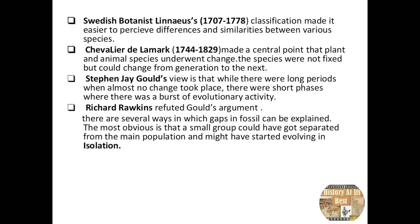Stephen Jay Gould's view was that while there were long periods when almost no evolutionary change took place, there were short bursts of evolutionary activity — known as punctuated equilibrium. Richard Dawkins refuted Gould's argument and said there are several ways fossil gaps can be explained. The most obvious is that a small group could have separated from the main population and started evolving in isolation — the isolation theory.